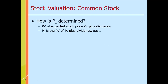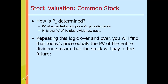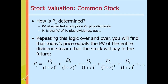How is P sub one determined? It is the present value of the expected stock price P sub two plus the dividends. And P sub two is the present value of P sub three plus dividends, and so on. Repeating this logic, today's price equals the present value of the entire dividend stream the stock will pay in the future.